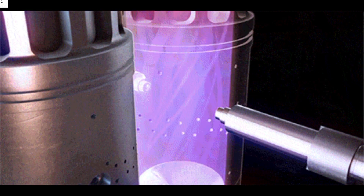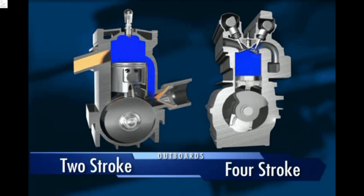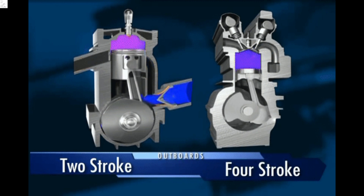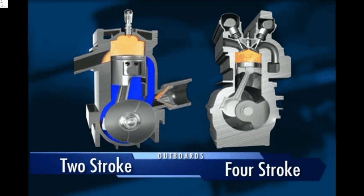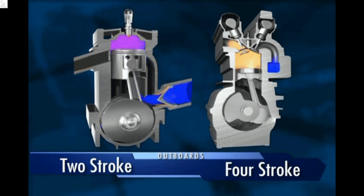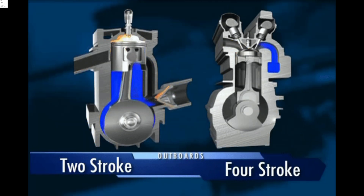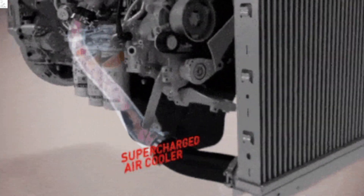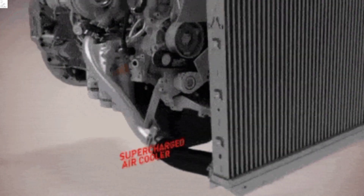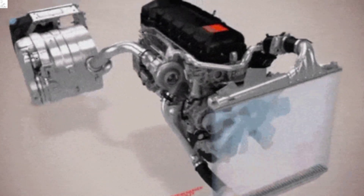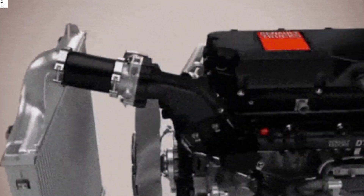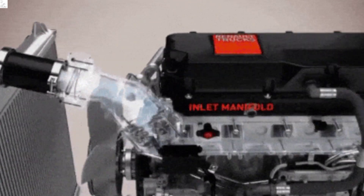1. Internal Combustion Engine (ICE). The internal combustion engine is the most widely used type of car engine. It burns fuel within the engine to produce mechanical power. There are two main types of ICEs. A. Gasoline engine: this engine runs on gasoline (petrol) as fuel. It mixes fuel with air, compresses the mixture, and ignites it with a spark plug.